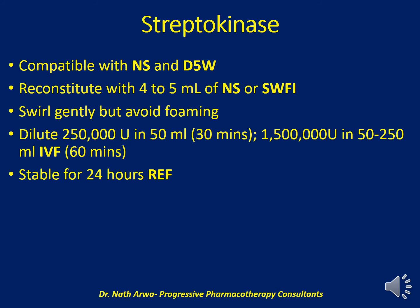Streptokinase is compatible with both 5% dextrose and normal saline. We should reconstitute the vial with 5 ml of normal saline or sterile water for injection, adding the liquid and swirling gently to avoid foaming. Dilute 250,000 units in 50 ml of IV fluid and infuse after homogenizing over 30 minutes. For doses of up to 1.5 million units, dilute in 50 to 250 ml of IV fluid and infuse over 1 hour. Such diluted IV fluids after homogenizing are stable under refrigeration for 24 hours.